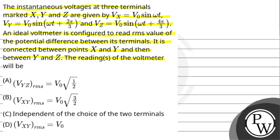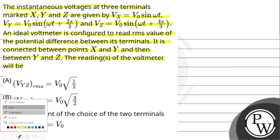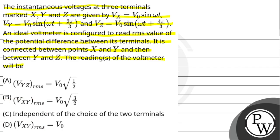The readings of the voltmeter will be: Option A — Vyz_rms = V₀√(1/2). Option B — Vxy_rms = V₀√(3/2). Option C — independent of the choice of the two terminals. Option D — Vxy_rms = V₀.